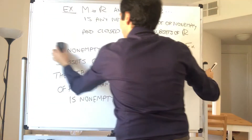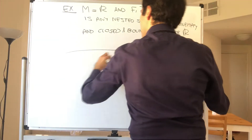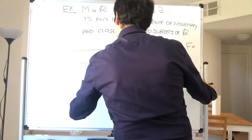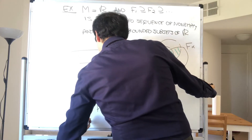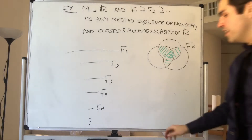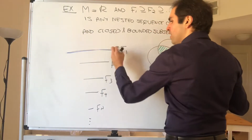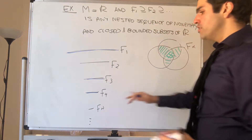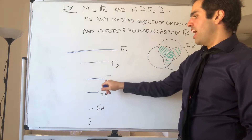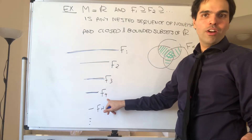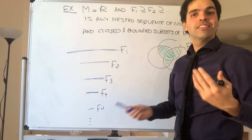And why does a nested sequence have the finite intersection property? Think of it as follows: this is F1, F2, F3, F4, et cetera — in general Fn, getting smaller. Well, if you take the intersection of finitely many of those, say F1, F3, and F4, it's always equal to the one with the largest index. So the intersection of F1, F3, and F4 is just F4. And F4 is non-empty. That's why the intersection of finitely many of those F-n's is non-empty.